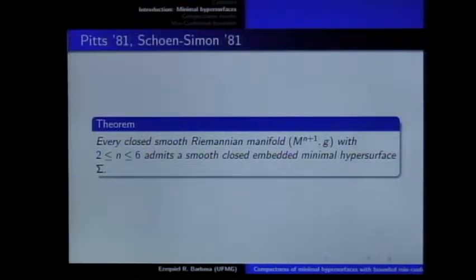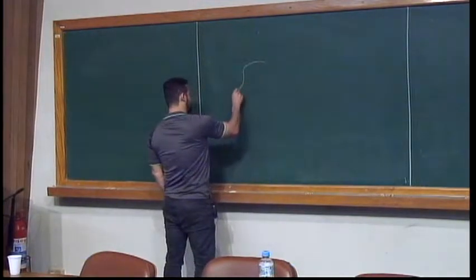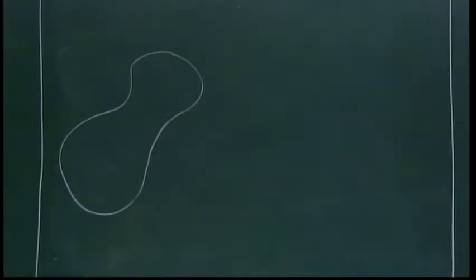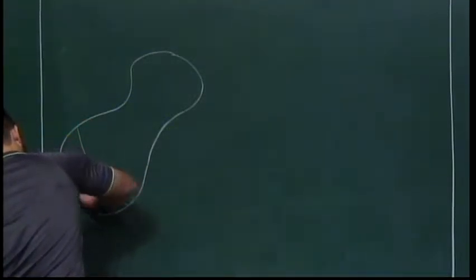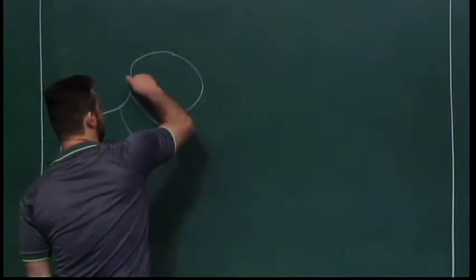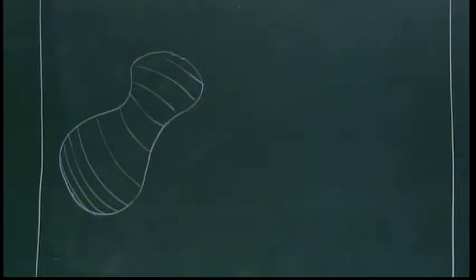Of course, you can obtain more general results when you allow singularities. This result, as David was talking about a few minutes ago, you can prove using the minimax procedure. We consider sweepouts on this manifold, consider the maximum area of the elements in the sweepout, then consider all homotopically equivalent sweepouts, and take the infimum of the maximum areas. This gives you a minimal hypersurface.